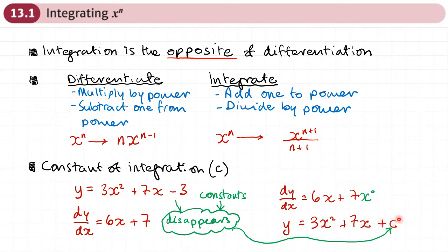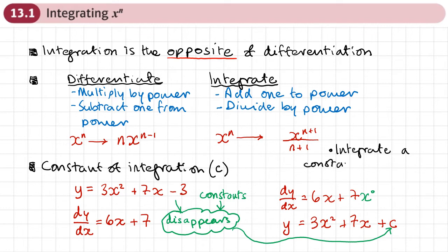Whenever we integrate, we always put plus C on the end to show that we appreciate there could have been a number there at the start. There might not even be a number there, but this shows we appreciate there could have been. Also worth noting: when we integrate a constant, it just becomes the constant times x. So we don't need to write x to the power of 0 — a constant just becomes a constant times x, and then we've got the constant of integration plus C at the end.